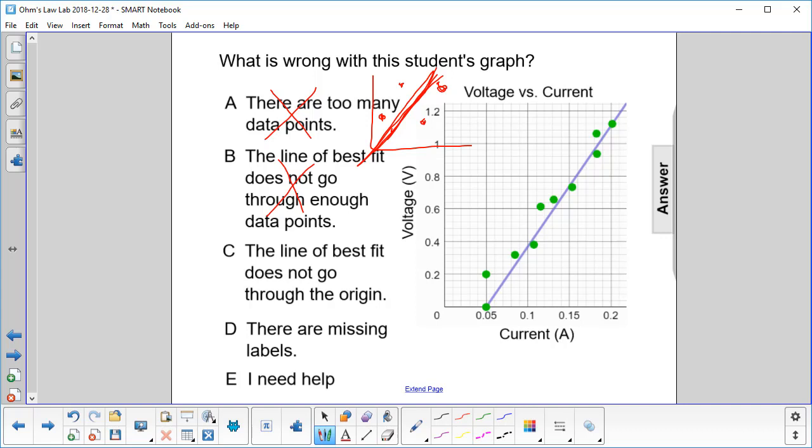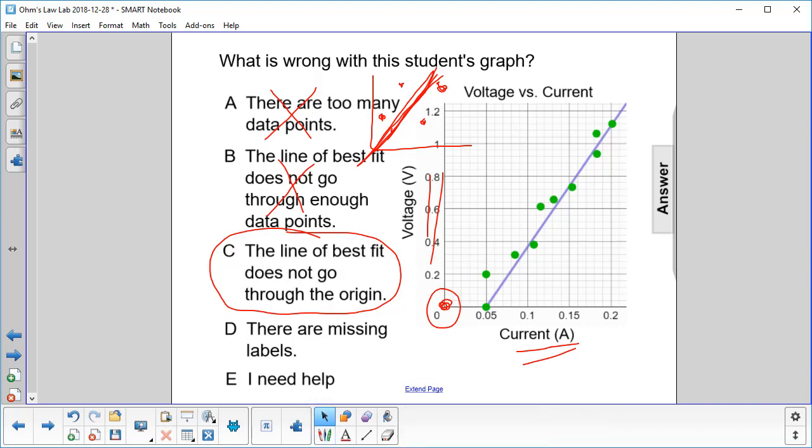The line of best fit does not go through the origin. Yes, we're saying that at zero voltage, you have zero current, so you're allowed to choose that point. There are missing labels? Nope, they're all there, so the answer is C.